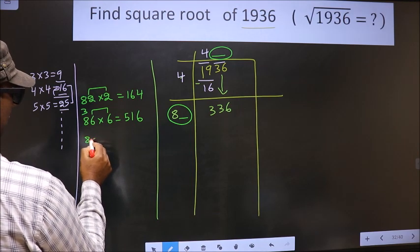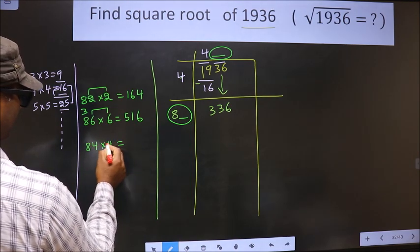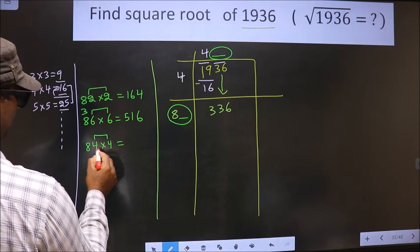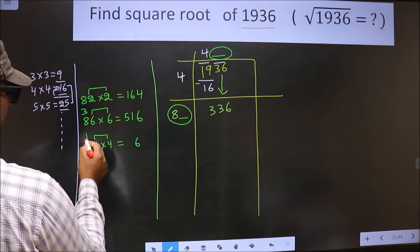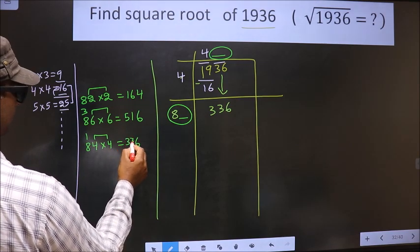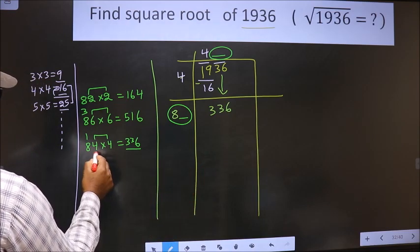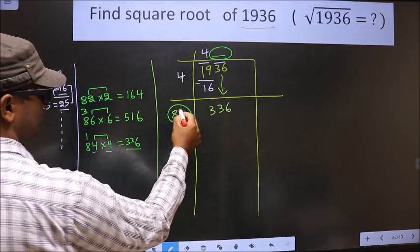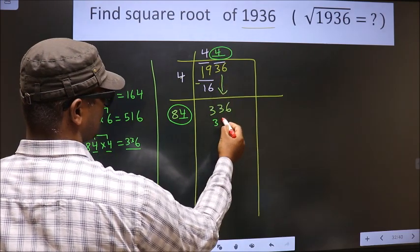So if we take 4, 84 into 4. These two should be same. So 4 into 4, 16. 6, 1. 4 into 8, 32 plus 1, 33. So we have exact 336 for the number 4. So we take 4 here, 4 here and here 336.